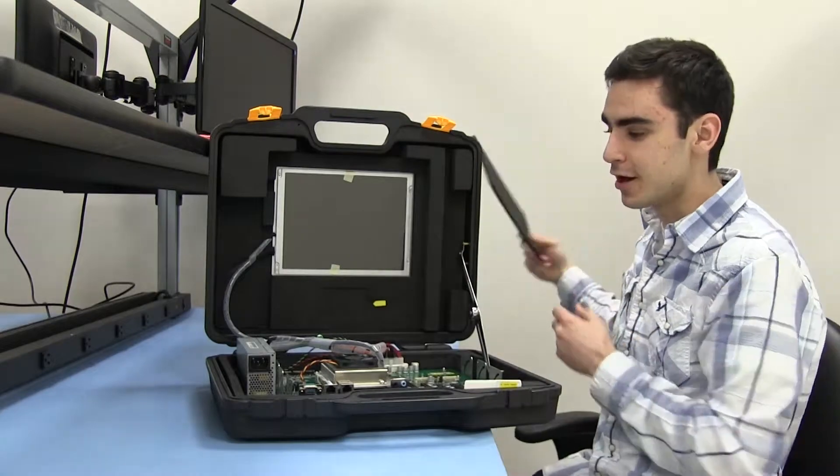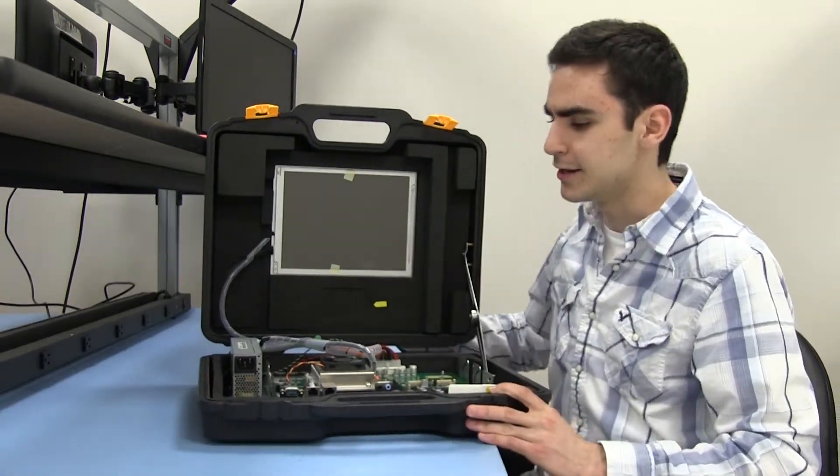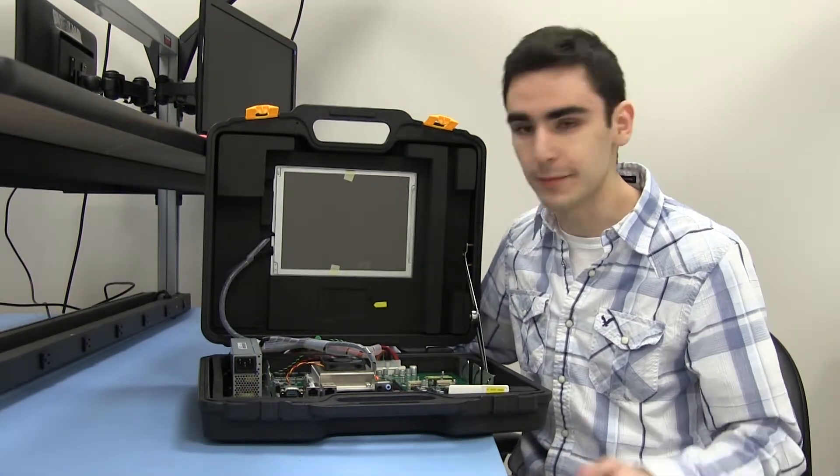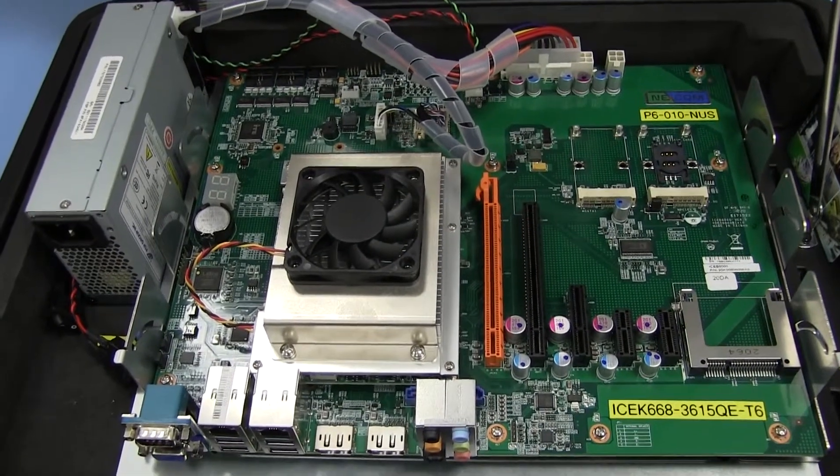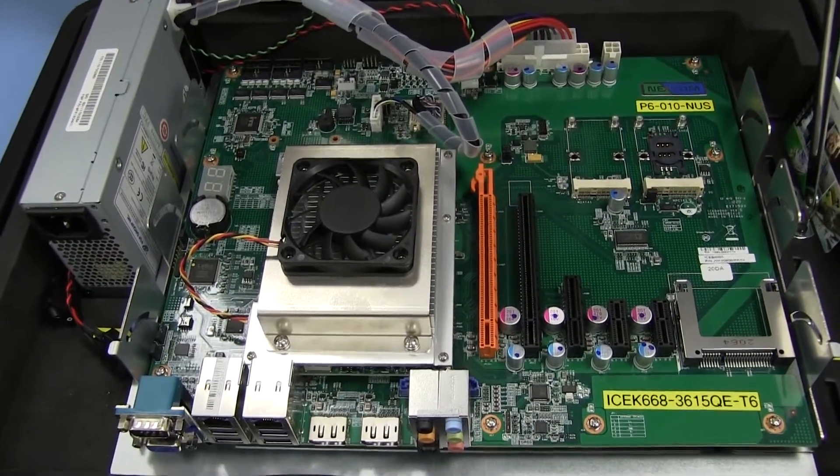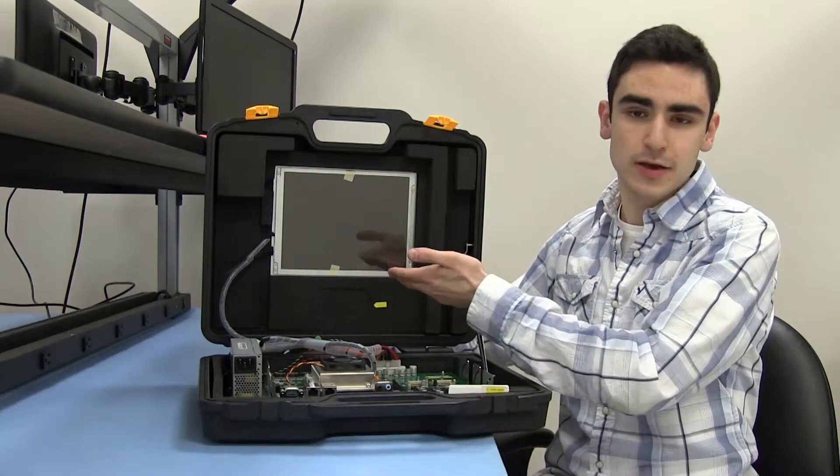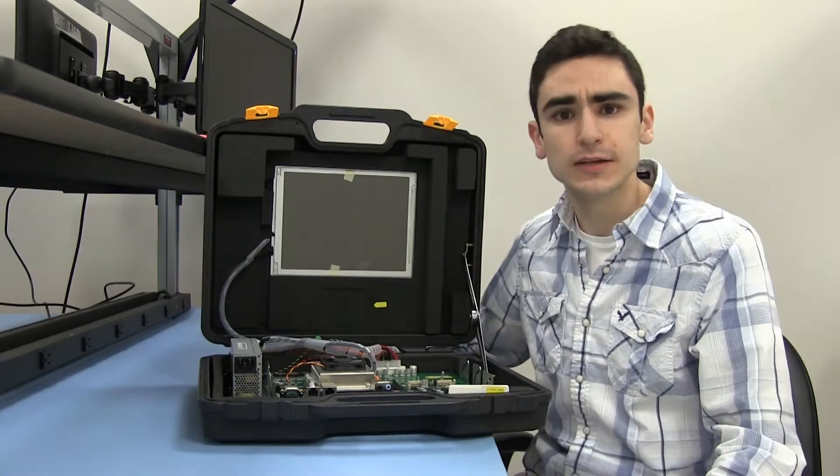So, this right here is a ComExpress starter kit. It's a great example of a starter kit, too. It used to be that starter kits, you had to assemble them yourselves. But now, they're coming like this. They have a carrier board on it, as well as a ComExpress board on the carrier board. In addition to that, it comes in a case and with a display. So, that's really useful.